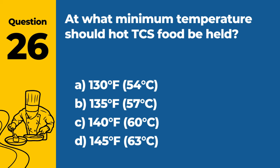Question 30: How should chemicals be properly stored in a food service operation? A. Alongside food items for easy access. B. In a designated area away from food. C. In the same area as cleaning equipment. D. On high shelves above food preparation areas. Answer: B. In a designated area away from food. Chemicals should be properly stored in a designated area away from food to prevent contamination and ensure food safety.